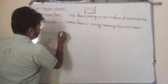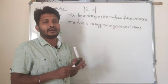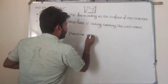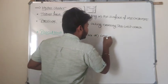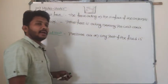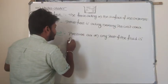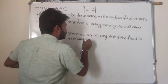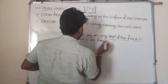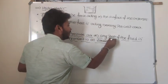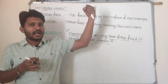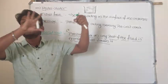According to Pascal, pressure acting on any part of the fluid is transmitted in all directions. If I apply pressure at one direction, that pressure is going to distribute in all directions. In order to understand Pascal's law, we will consider one spherical object filled with fluid.